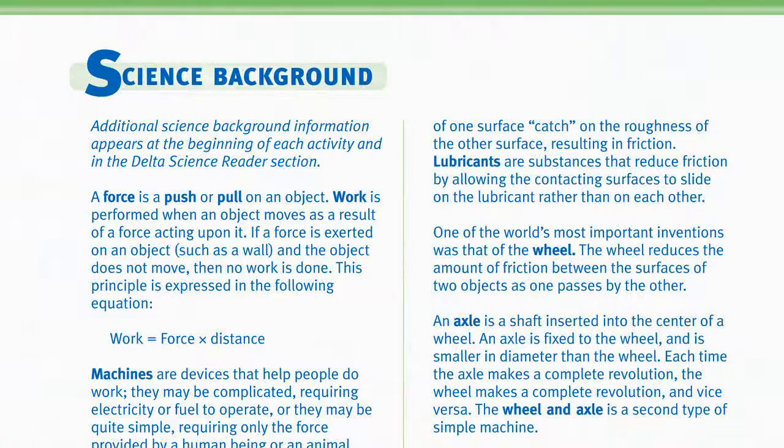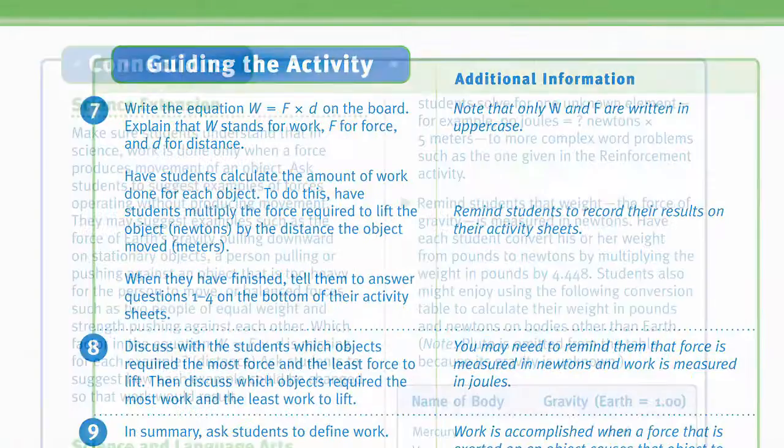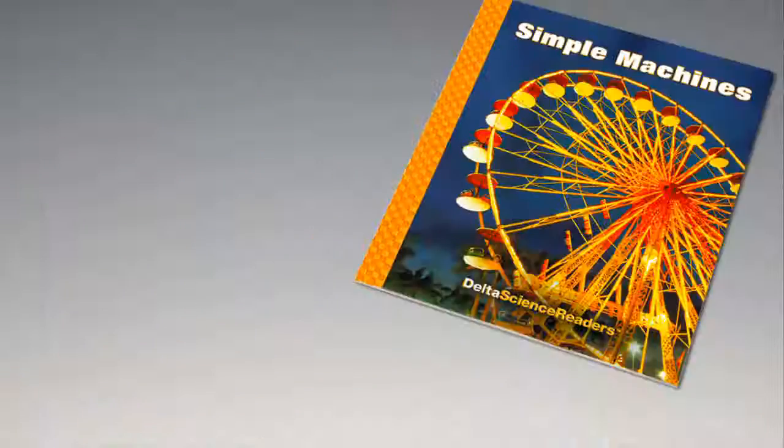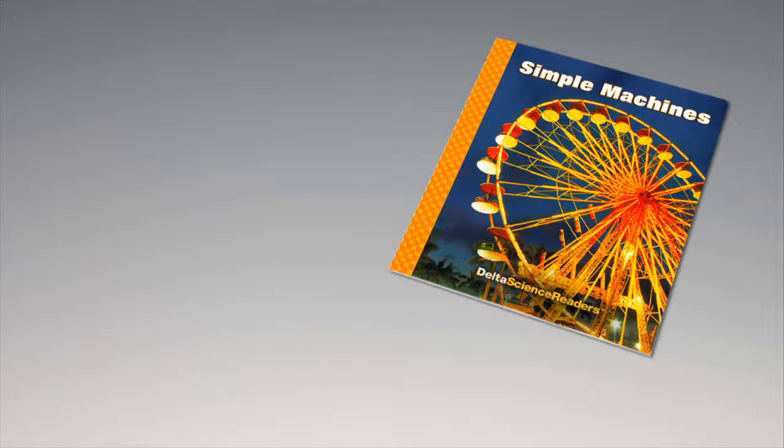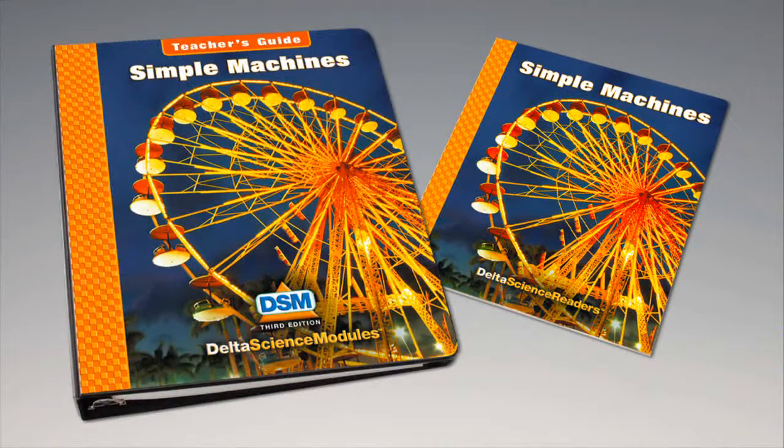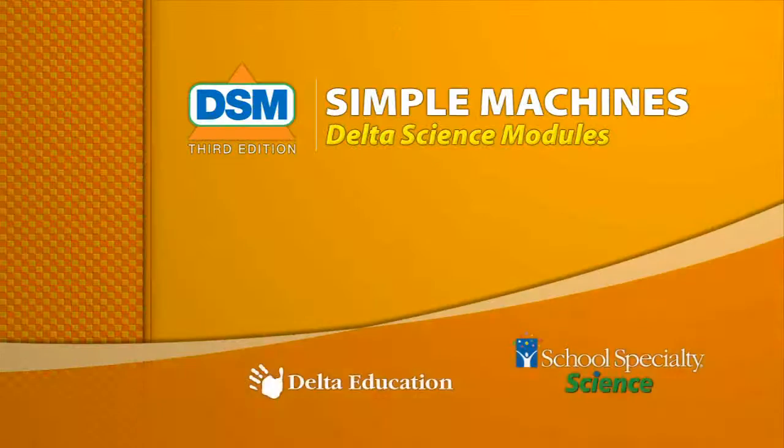To conclude the activity, return the fulcrums, hex nuts, plastic cups, paper clips, pegboard beams, and roll of tape to the kit. For science background, reinforcement activities, curriculum connections, and information about the Delta Science Reader, please consult your DSM teacher's guide. Thank you.